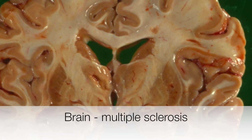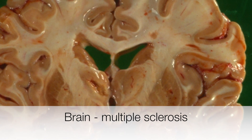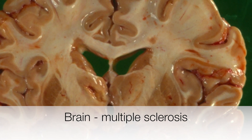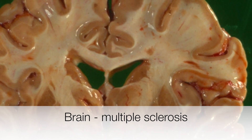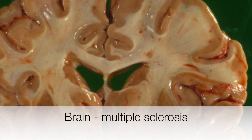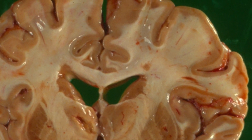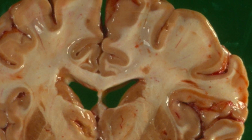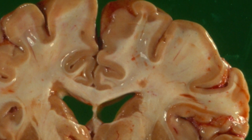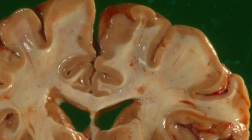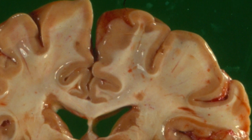This slice of brain shows features of multiple sclerosis, characterized by separate areas where there is loss of myelin in the brain. The demyelinated areas become firmer because of deposition of glial tissue — hence the term sclerosis — because the brain feels firmer in the affected areas.